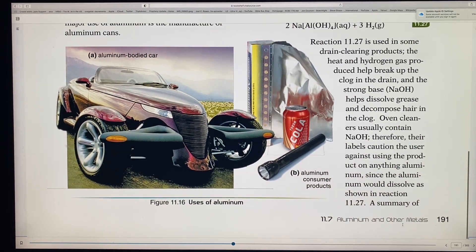In fact, this reaction is actually used in some products like draining drains and the heat and hydrogen gas produced help break up the clogs in the drain and the strong base. When you have the strong base NaOH with a strong base, sodium hydroxide helps dissolve grease and decompose hair in the clog as for plumbing. Oven cleaners also contain it. This base of sodium hydroxide with aluminum. Therefore, their labels caution the user against using product on anything aluminum. Because if you take this, if you're using this with aluminum, then of course, the aluminum is going to react and actually melt. So say you have aluminum in your stove, you want to make sure that your oven cleaner is not a strong base because it would actually cause corrosion in the oven.